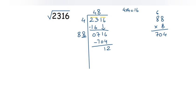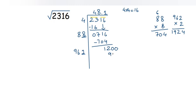Double of 48 is 96. Along with 96, find a new digit. Trying 962 × 2 = 1924 — that's more than 1200. So try 961 × 1 = 961. That works. Subtract 961 from 1200 to get remainder 239.